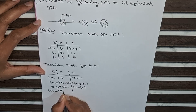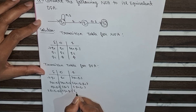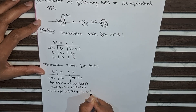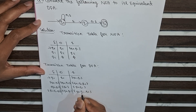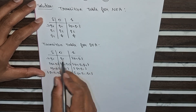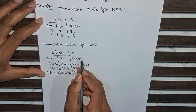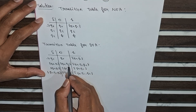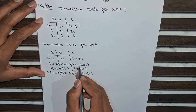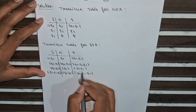Continuing to fill the table: q0,q1 maps to q0,q2 on 0 and q0,q1,q2 on 1. q0,q2 maps to q0,q1 on 0 and q0,q2 on 1. q0,q1,q2 maps to q0,q1,q2 on both 0 and 1. These repeated pairs confirm no new states arise, so this is the final transition table for the DFA.